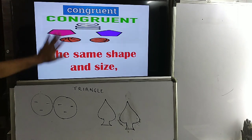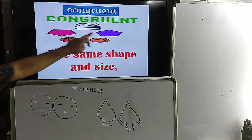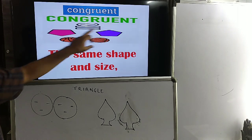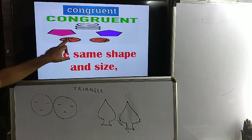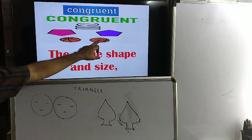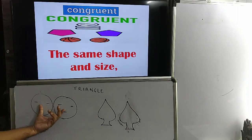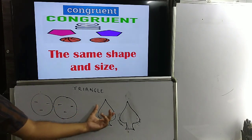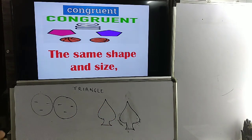Congruent figures are those figures having the same shape and same size. Here, these two pentagons are in the same shape and same size. These two balls are in the same shape and same size. These two figures I have drawn with the same shape and same size. So congruent figures are just a photocopy of each other.